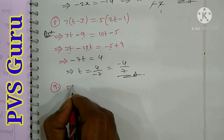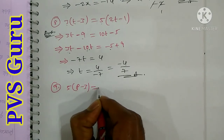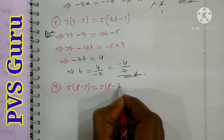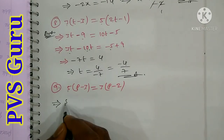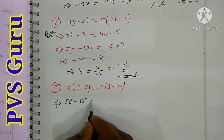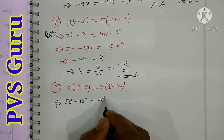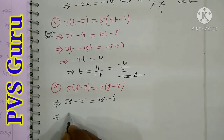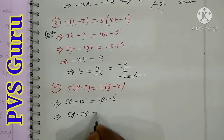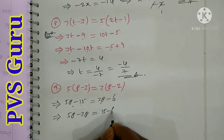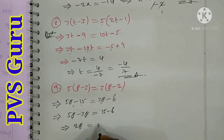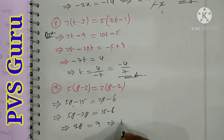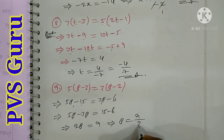Question number 9: 5 into (p minus 3) is equal to 3 into (p minus 2). Expanding: 5p minus 15 equals 3p minus 6. Take 3p to the left side and minus 15 to the right side. 5p minus 3p is 2p, equal to 15 minus 6 equals 9. So p is equal to 9 by 2.